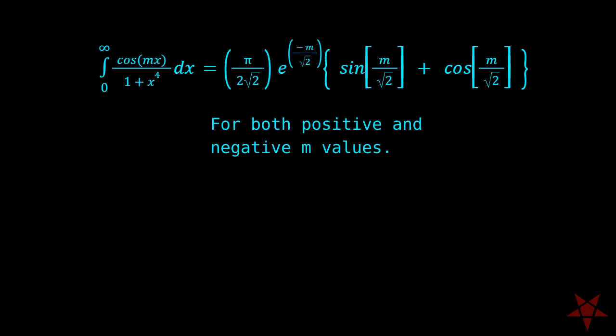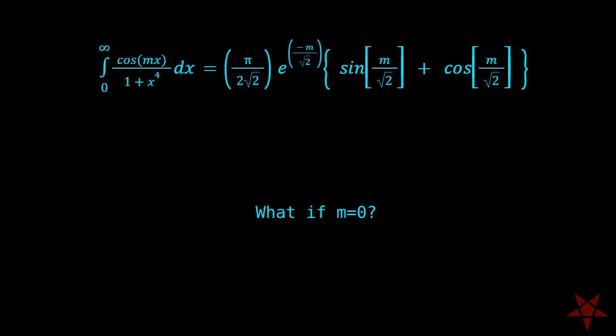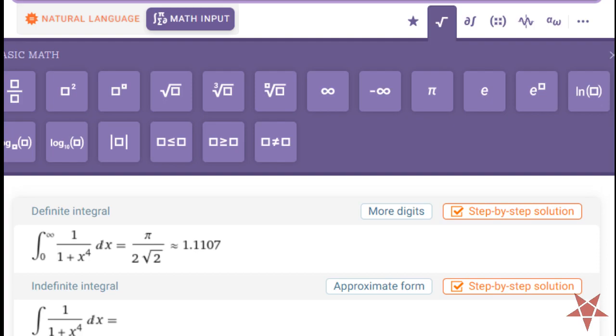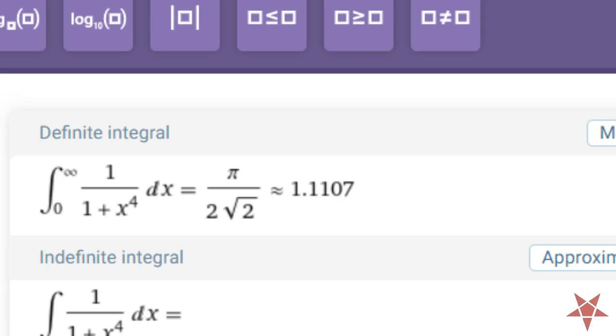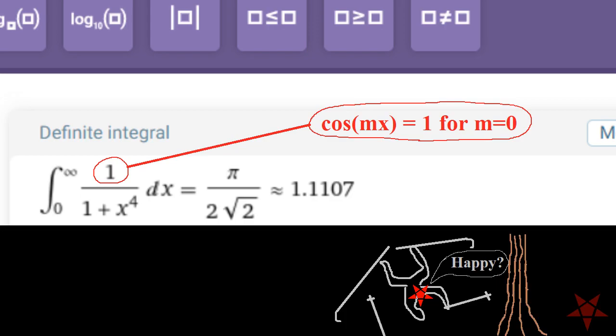The integral of cosine of mx over 1 plus x to the fourth from 0 to infinity is the same for plus m as it is minus m, and you may have noticed that I blew past the opportunity to skip a ton of video editing when I ignored the fact that cosine of mx is an even function, making the sign of m irrelevant to the value of the integral. Just in case it wasn't obvious, we should probably touch base on the matter of m equals 0. As you can see, 1 over 1 plus x to the fourth integrates to pi over 2 root 2 when boundaries are set from 0 to infinity, and this helps us because cosine of mx is equal to 1 when m equals 0. If you substitute m equals 0 into the formula that we just derived, you will get the same result.